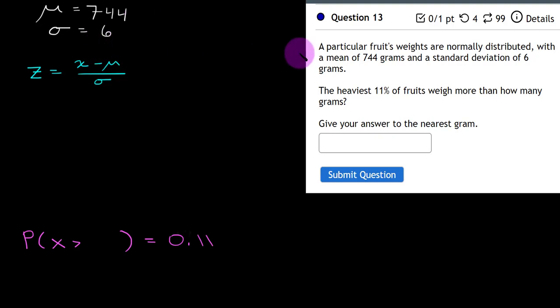Here, a particular fruit, its weights are normally distributed with a mean of 744 grams and a standard deviation of 6 grams. The heaviest 11% of fruits weigh more than how many grams? So this is working backwards in the sense that we are given a percentage or a probability, but we want to find the corresponding weight for that area under the normal curve.